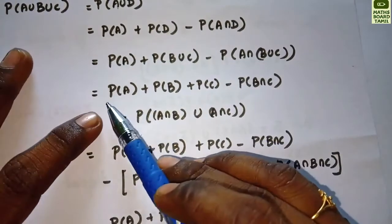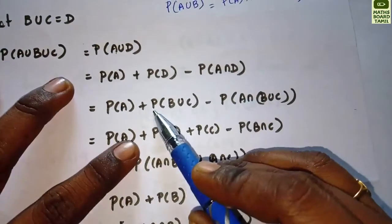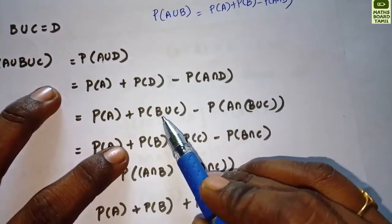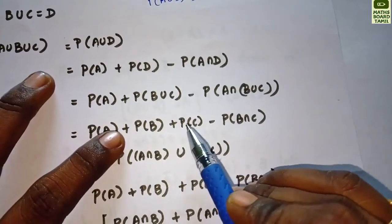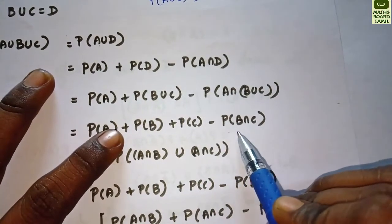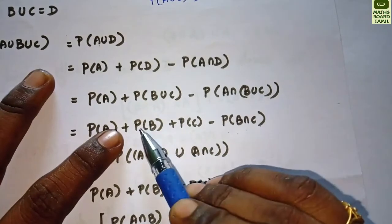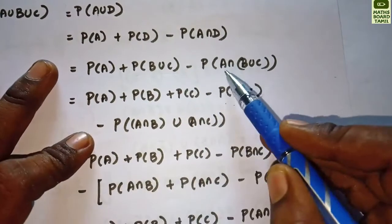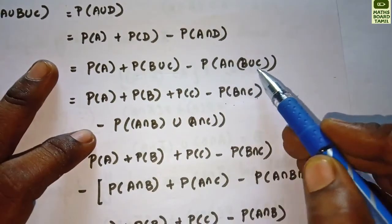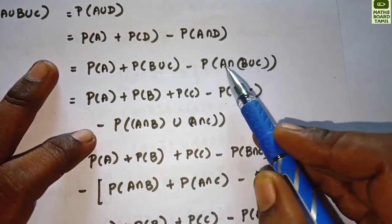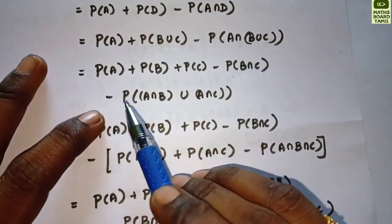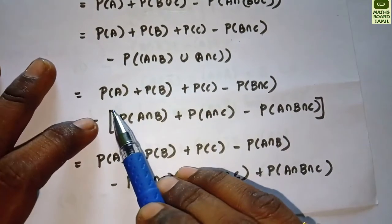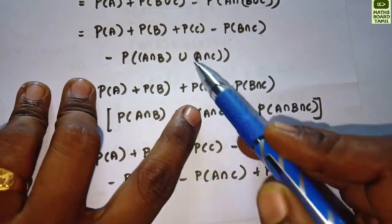We expand probability of B union C using the same union formula: probability of B plus probability of C minus probability of B intersection C. For the intersection term, we distribute: A intersection (B union C) equals (A intersection B) union (A intersection C). This gives us probability of A plus probability of B plus probability of C.